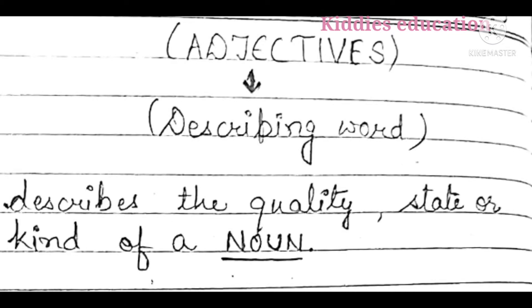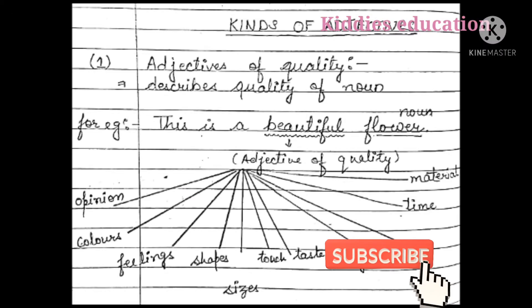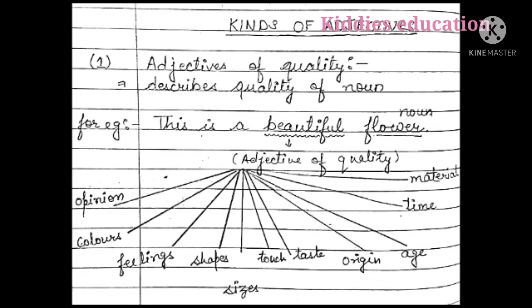Good morning students. Today we are going to read about adjectives. Adjectives are describing words which describe the quality, state, or kind of a noun. A noun is the name of anything — a place, animal, or anything around you. An adjective is the word which describes the noun, telling about any quality, state, or kind of a noun. Now we will see what are the kinds of adjectives.